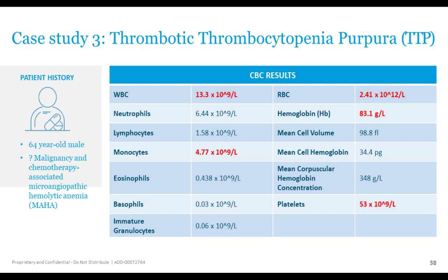Case three is a thrombotic thrombocytopenic purpura — TTP — a condition that must be acted on quickly. We are expected to recognize and act on this very quickly in the laboratory by informing clinicians. The full blood count was fairly unremarkable until the platelet count of 53 — moderately reduced. It was this unexpected low platelet count that triggered the film review.